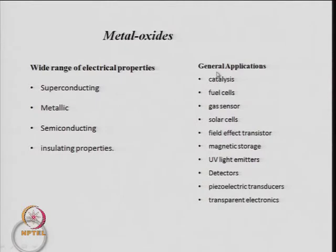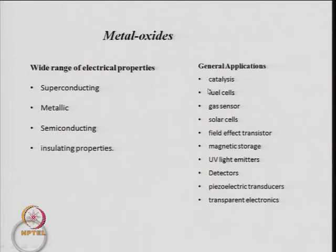The electrical resistivity of materials spans about 16 orders of magnitude — from insulators (~10⁸ Ω) to metals like copper or aluminium (~10⁻⁸ Ω·cm⁻¹). Metal oxides, with their wide-ranging electrical properties, find applications as catalysts, fuel cells, gas sensors, solar cells, field-effect transistors, magnetic storage systems, UV light emitters, detectors, piezoelectric transducers, and in transparent electronics.